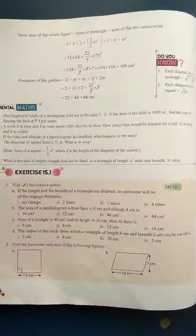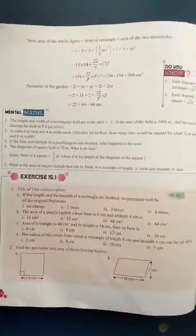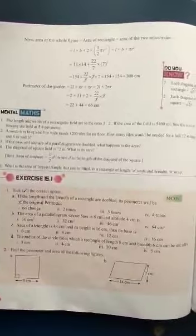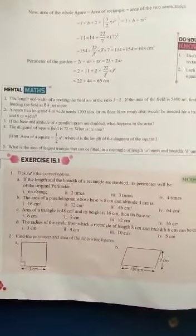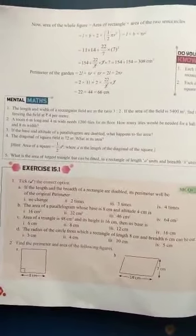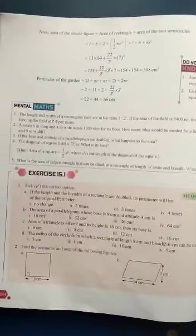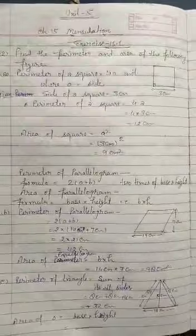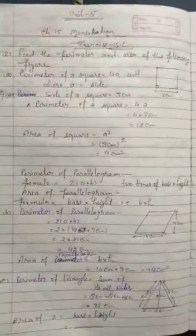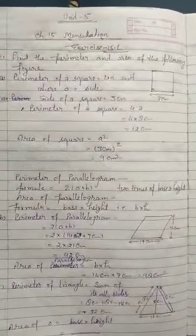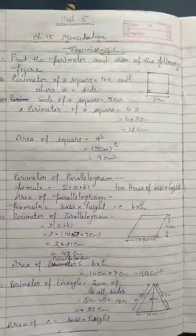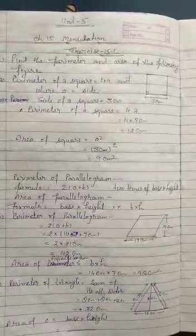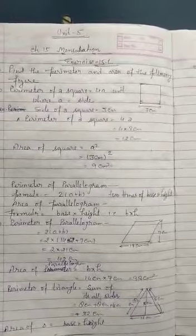Question number 2 is: find the perimeter and area of the following figures. The first figure is a square. All of us know very well about the square. In the square, all sides are equal. Here, the side of the square is given as 3 cm.